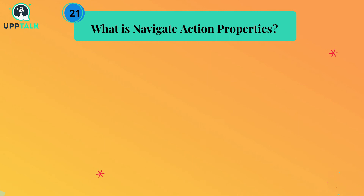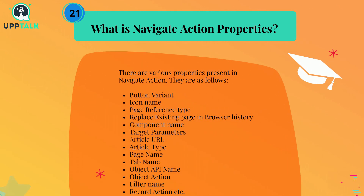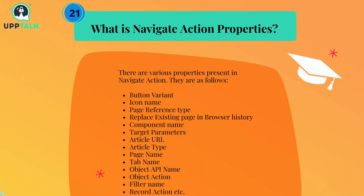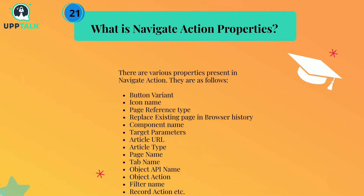What are navigate action properties? There are various properties present in navigate action: Button variant, Icon name, Page reference type, Replace the existing page in the browser history, Component name, Target parameters, Article URL, Article type, Page name, Tab name, Object API name, Object action, Filter name, Record action, etc.